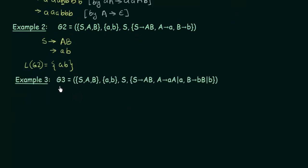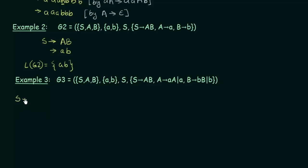Here we have another example grammar G3. These are the non-terminal symbols, these are the terminal symbols, S is the start symbol, and we have production rules: S gives AB, A gives AA and also small a, and B gives BB and also small b. Starting with the start symbol, S gives AB.